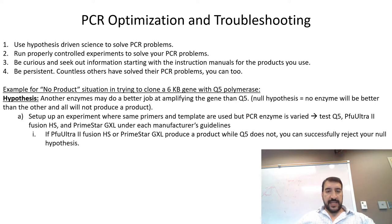What we'll do is we'll set up a reaction where we use the same primers and the same template, but the PCR enzyme is varied. We'll follow the manufacturer's guideline for each one of the products and we'll try Q5, we'll try PFU Ultra 2 Hot Start polymerase, and we'll try Primestar GXL. If PFU Ultra or Primestar produce a product while Q5 does not, then you can successfully reject your null hypothesis and you've made progress.